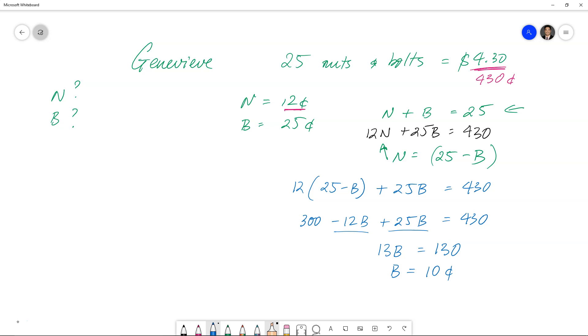So that means every bolt is going to be 10 cents. So we're going to now substitute B back to the equation, one of them you can pick and choose. I'm going to pick the first one cause it's a lot easier. So that means if a nut and bolt is 25 cents, and we know that a bolt is 10, that means a nut is going to cost 15 cents.